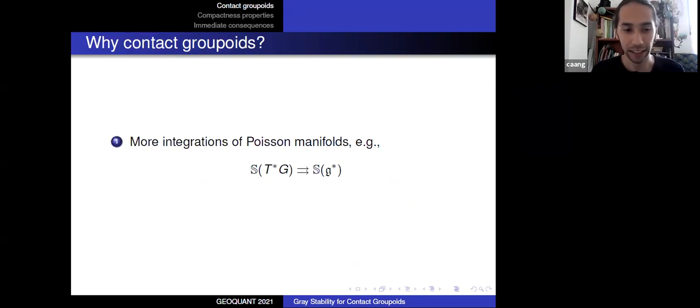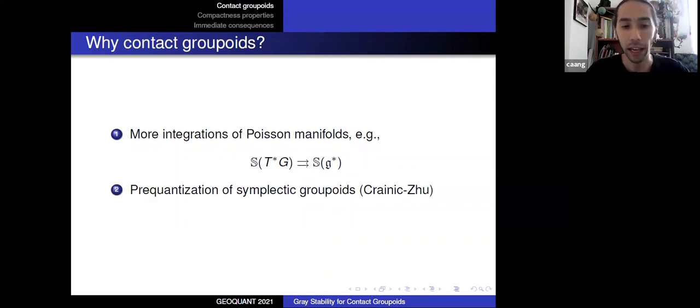You may ask, why contact groupoids? And then I will tell you, well, they might be interesting in their own right, but for this talk, the things that I will care about is that first, they provide more integrations of Poisson manifolds. This is such an example. You know that the sphere bundle on the cotangent bundle of any manifold comes endowed with a contact structure, which is given by the restriction of the Liouville form. And it turns out that this structure is multiplicative in the sense that I said before, and that produces this kind of contact groupoid. And second, well, they are the objects that were used to describe the prequantization of symplectic groupoids in the world of Landsman and Ramazan. I will say more on this by the end of the talk.